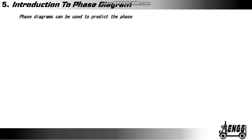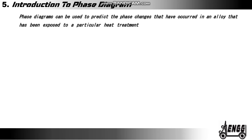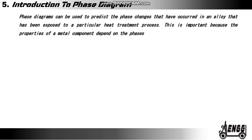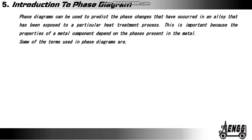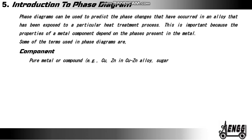Introduction to phase diagrams. Phase diagrams can be used to predict the phase changes that have occurred in an alloy that has been exposed to a particular heat treatment process. This is important because the properties of a metal depend on the phases present in the metal. Some of the terms used in phase diagrams are: Component — a pure metal or compound, for example copper, zinc, or a copper-zinc alloy, sugar, water, solvent.